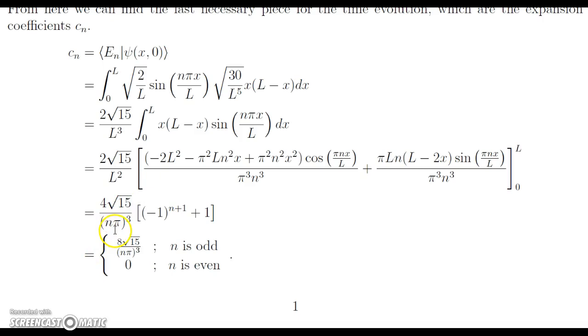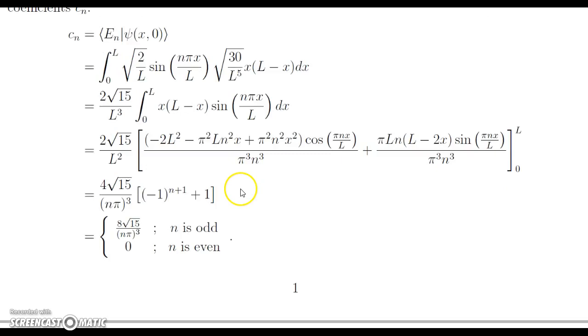So once we evaluate this, we get that cn is equal to 4√15 over the quantity (nπ)³, and then this is multiplied by (-1)^(n+1) plus 1. And since here the sign changes based off the value of n, we're going to get a different value when n is even and odd. When it's odd, we get 8√15 over (nπ)³, and then we get 0 when n is even.